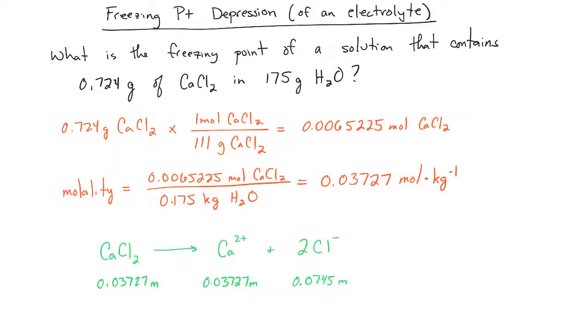So the total molality of the particles in the solution is actually going to be 0.1118 molal. This is because the freezing point depression as well as boiling point elevation both properties do not care what the ions in the solution are.